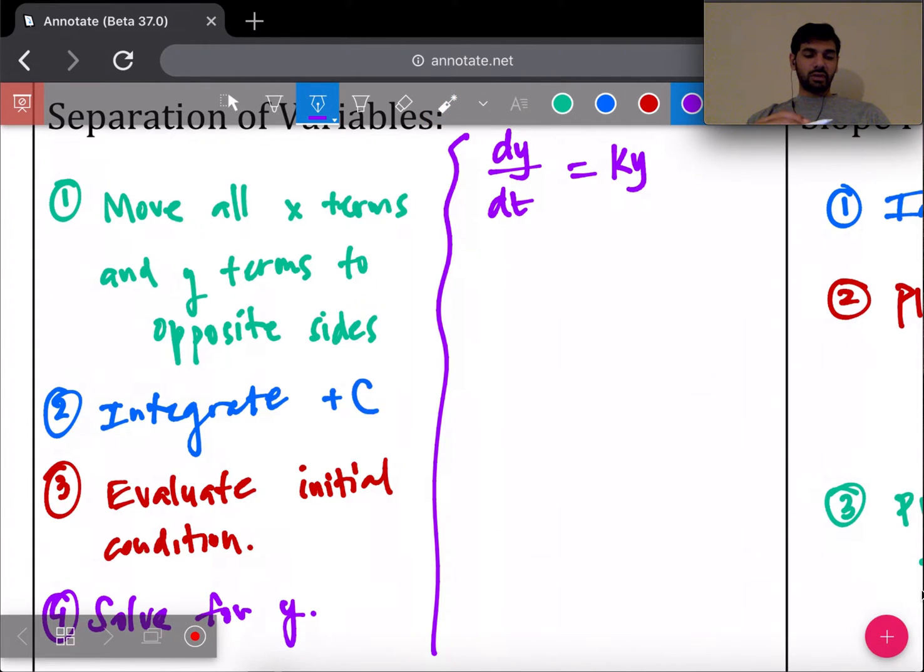The first step is to separate our terms: move the y variables to one side and move the x or t variables to the other side. I have y on this side, k is a constant, and dy/dt here. I can separate dy and dt, so I'm going to move dt over here and divide y and move it over here. I should end up getting 1/y dy equals k times dt.